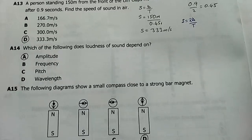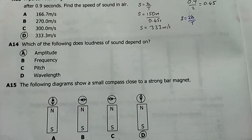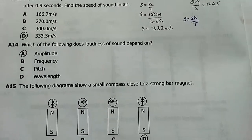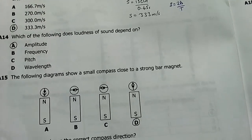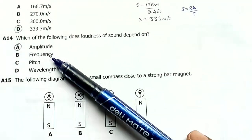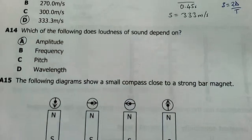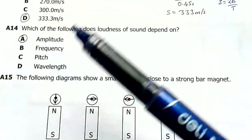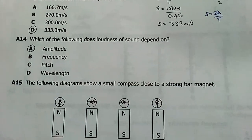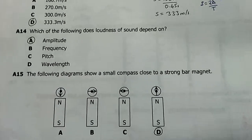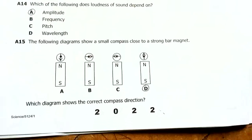Question A14: which of the following does loudness of sound depend on? The answer is amplitude. Frequency, wavelength, and speed are related to each other, but amplitude is connected to intensity and loudness.